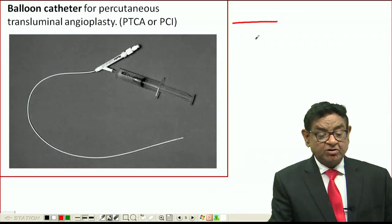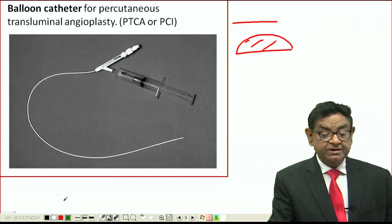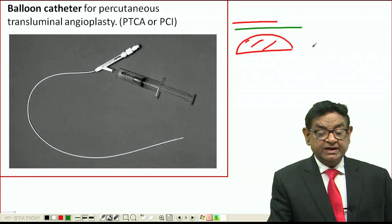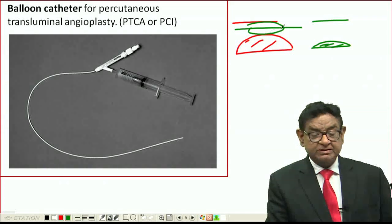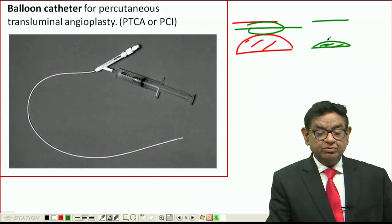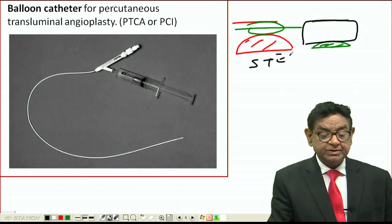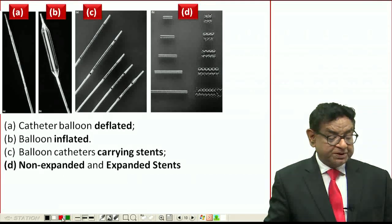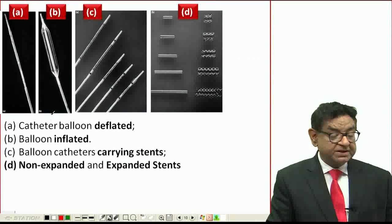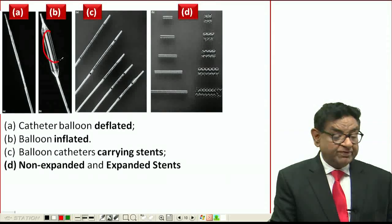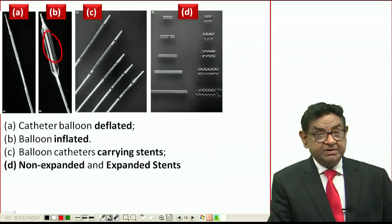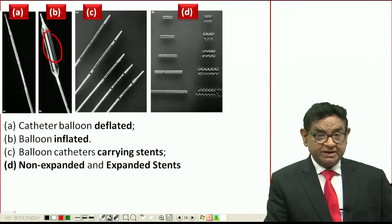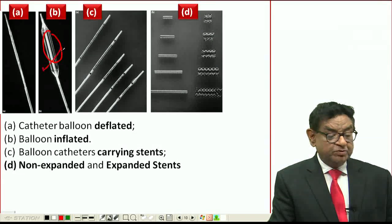Once the balloon catheter is positioned at the blockage, we inflate the balloon, which compresses the plaque against the arterial wall. After removing the catheter, the blockage may return, so we place a metallic tube called a stent to keep the vessel patent. As shown in the images: the balloon deflated, then inflated, then carrying the unexpanded stent, and finally the expanded stent keeping the artery open.